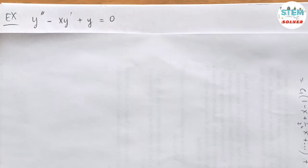Solve a homogeneous differential equation y double prime minus xy prime plus y is equal to zero using power series method.